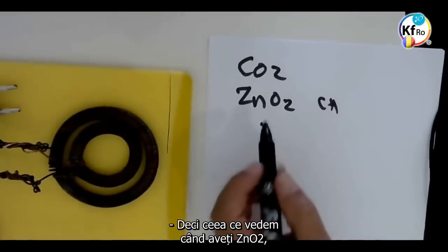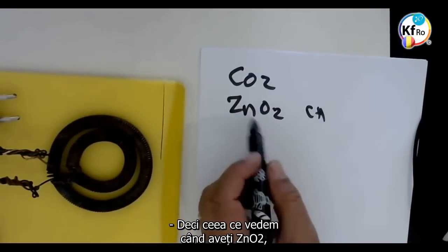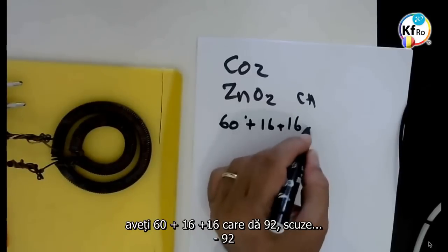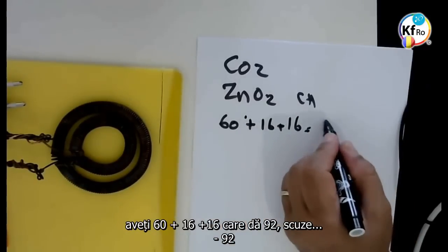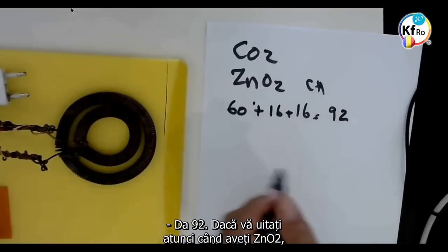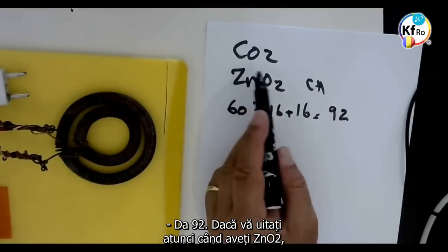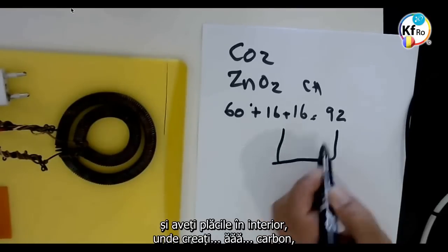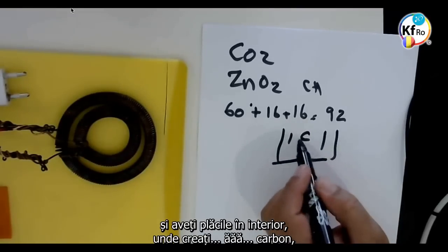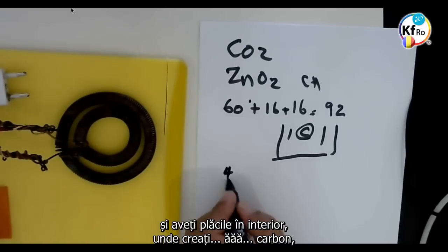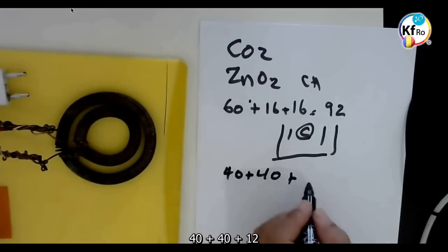So, what we see, if you have a Zinc Oxide ZnO2, you have 60 plus 16 plus 16, which is 92. If you look at when you have the Zinc Oxide and you have the plates inside where you're creating carbon, 40 plus 40 plus 12.